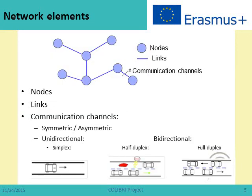What are the basic elements of a network? There are three basic elements: the nodes, which are the interconnecting elements; the links, which allocate communication channels; and the communication channels, which transport the information from one point to another — point-to-point or point-to-multipoint communications.